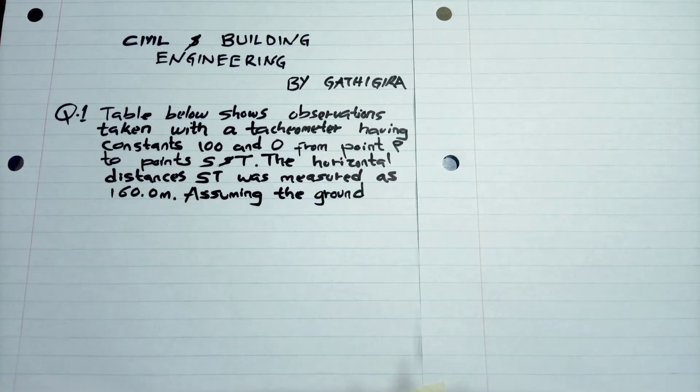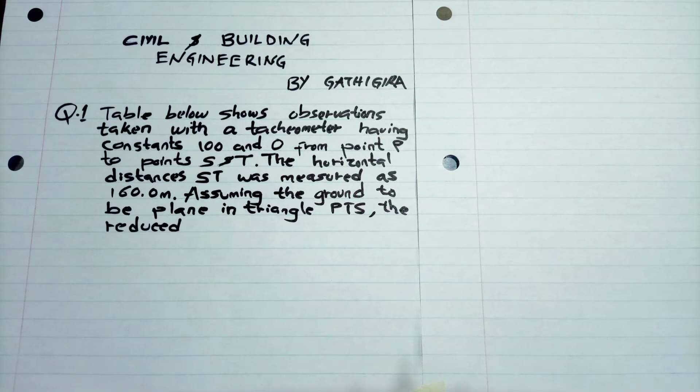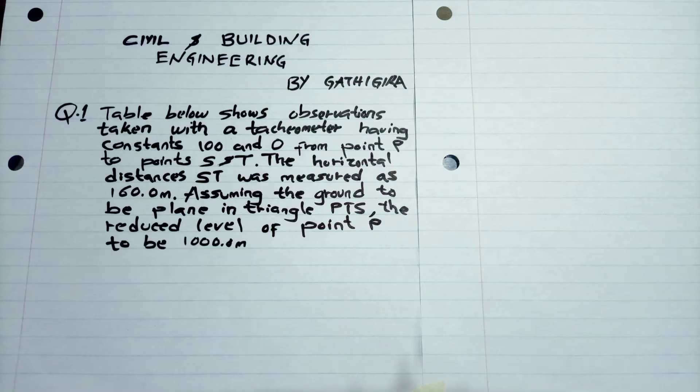Assuming the ground to be plane in triangle PTS, the reduced level of point P to be 1000 meters above datum.